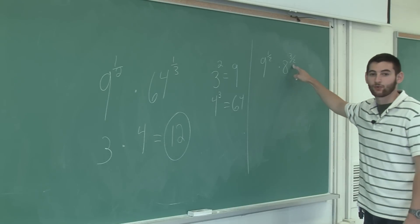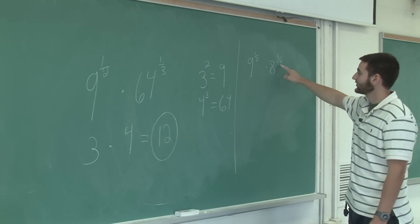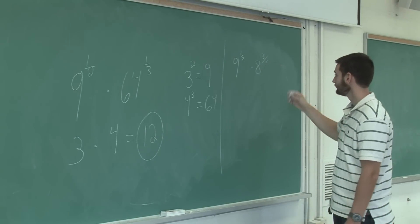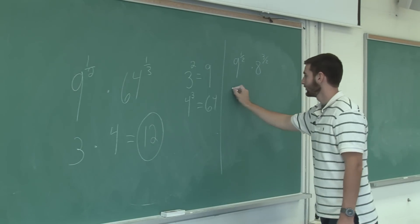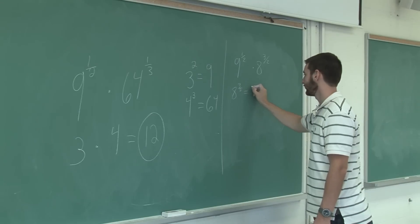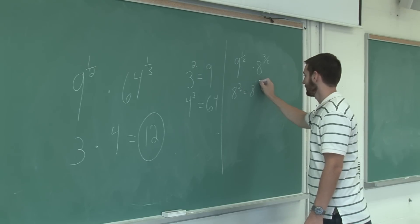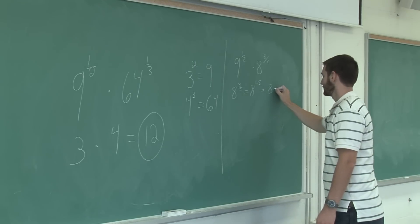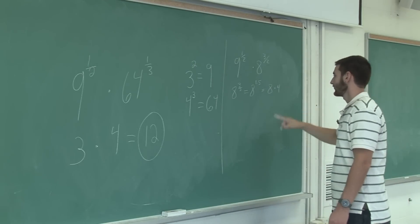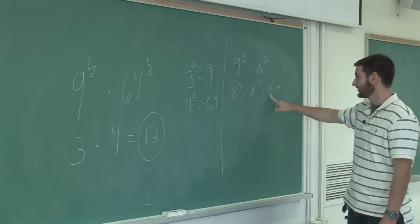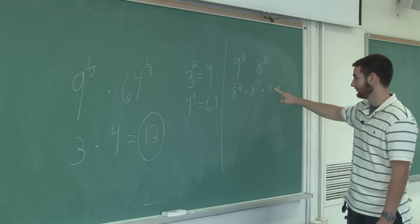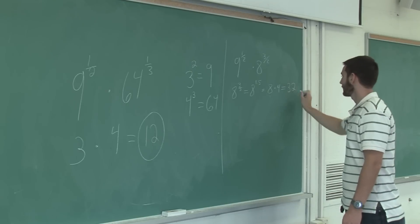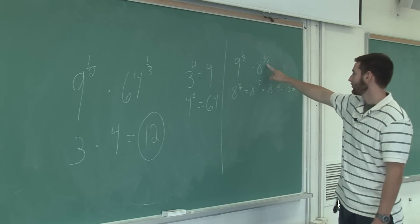Now 3 half is the same as 1.5 which is the same as 8 times itself 1 and a half times. So 8 to the 3 half equals 8 times 4 because it's 8 times itself once and times half of itself again. That's 32. So 8 to the 3 halves is 32.